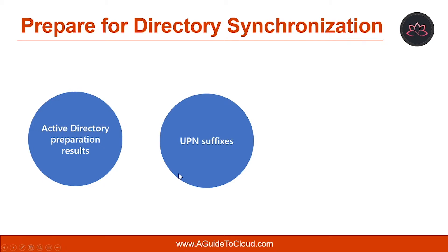How can you verify UPN suffixes? Before deploying directory synchronization, it is important to verify that on-premises user objects in Active Directory have a UPN suffix configured and that the value is correct for both the Active Directory domain and Microsoft 365. If an internet-routable domain is used as the UPN, then this domain should be the UPN suffix so that user principal names are of the form user@domain.